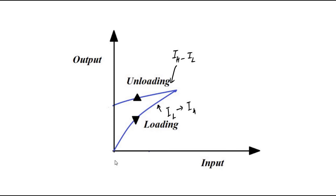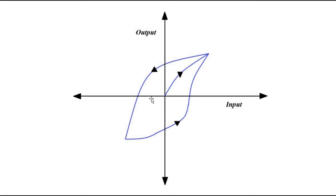This difference in output values at the same input values depending on the direction of input change is called hysteresis. When we consider the negative direction as well, during loading it will follow one path, then cycle in a particular direction, and never come back to the original path. This closed loop phenomenon is called hysteresis.